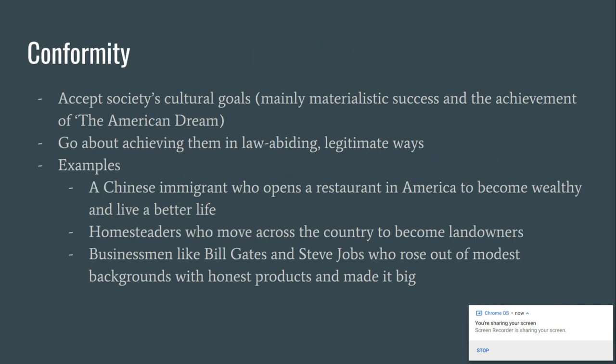The first way is conformity. Conformists make up the backbone of American society. They accept cultural goals and the legitimate means to achieve them. These are people that go to college, get a high-paying job, buy a house, buy a car — the whole nine yards. Or an immigrant from China who comes to open a restaurant and earn enough money to send his kids to college and live comfortably. Or homesteaders who moved across the country hoping for a better life. In more modern times, we have businessmen like Bill Gates, who rose from a humble middle-class background to become one of the richest men alive.